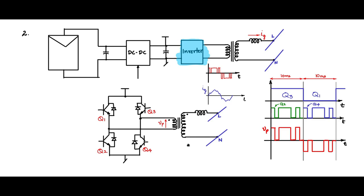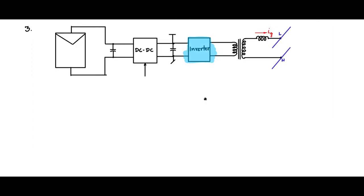So this is another topology where the DC-DC converter and the unfolding stage have been removed. The two power stages have been clubbed into one single inverter stage, thereby improving efficiency.